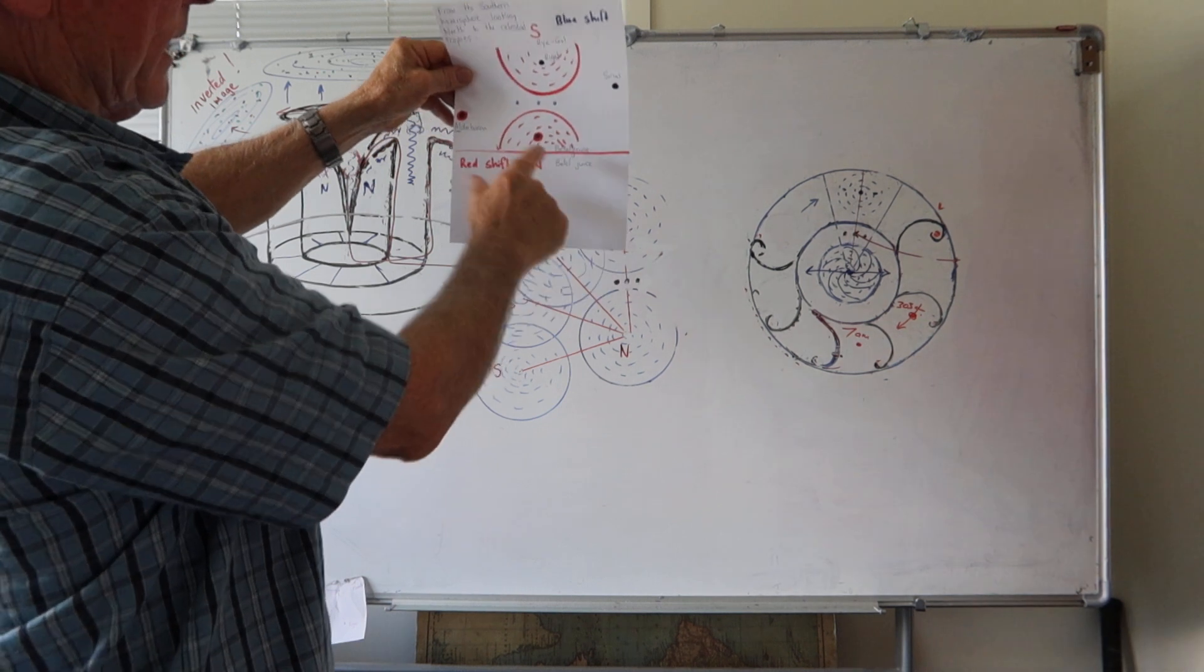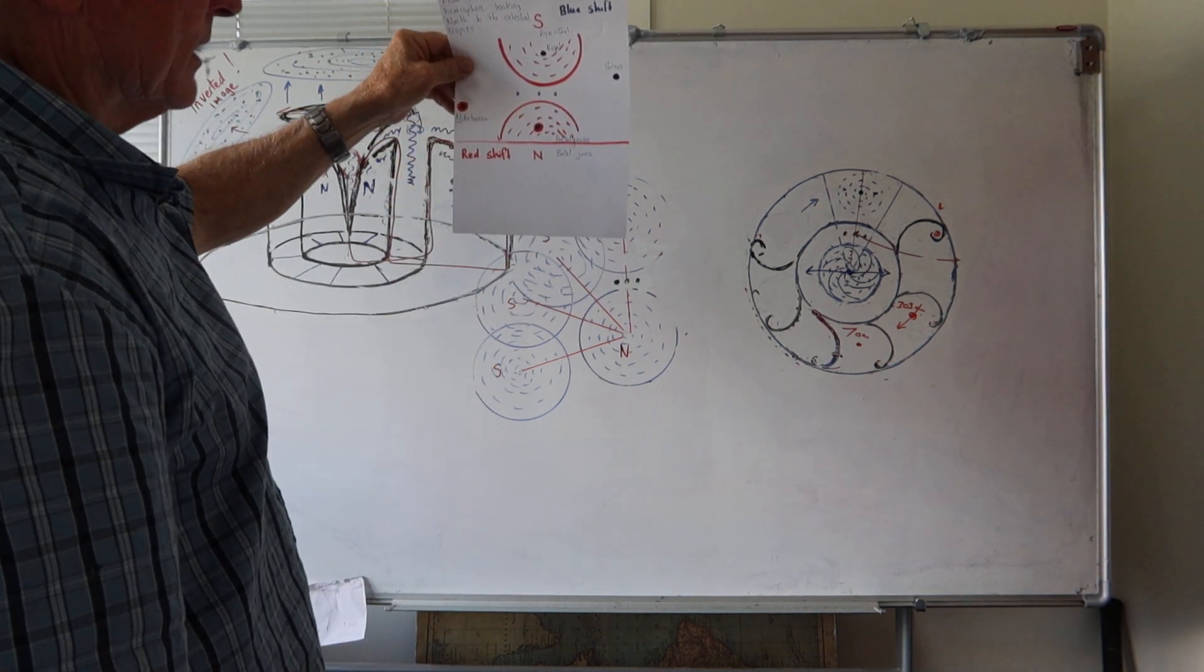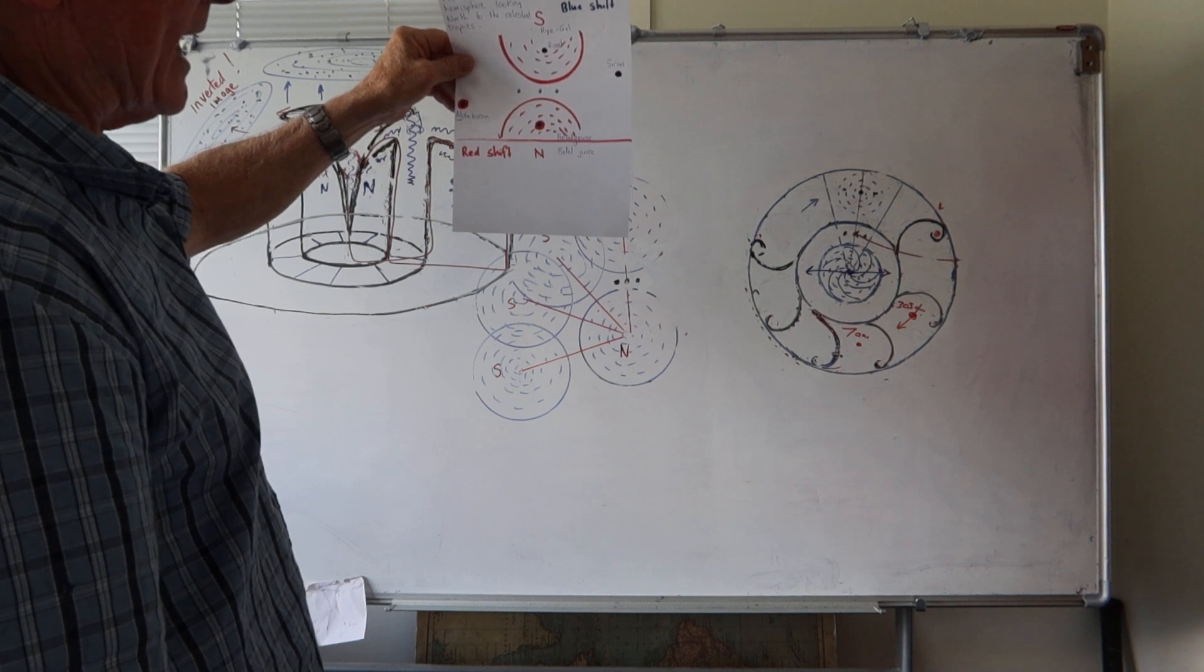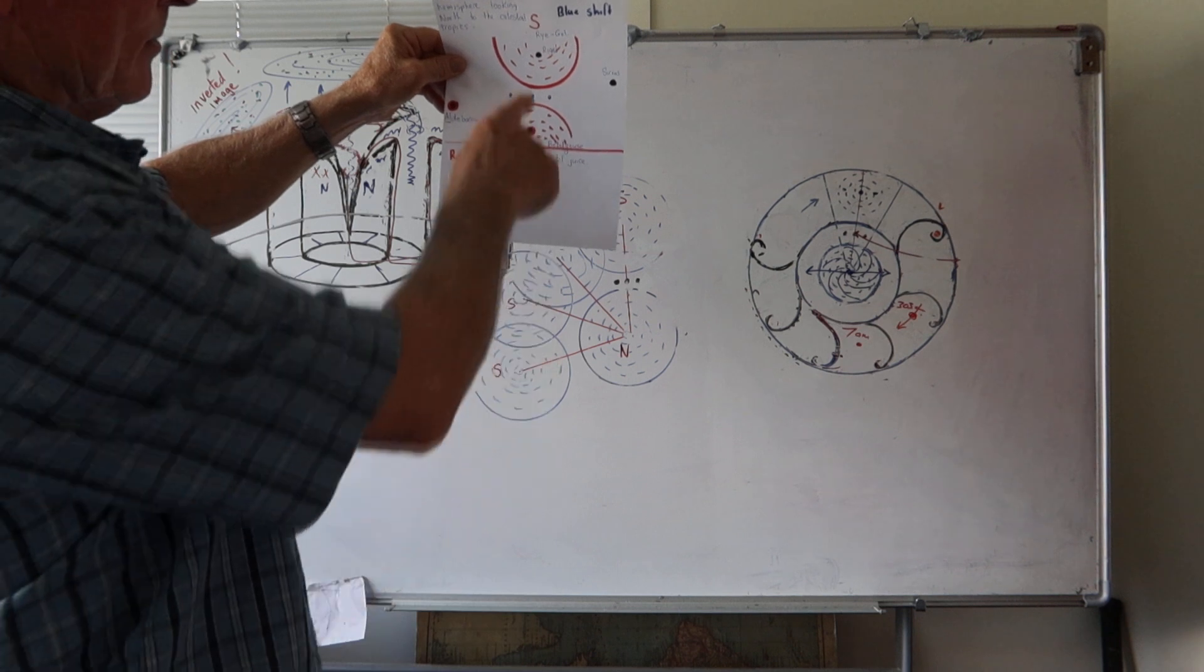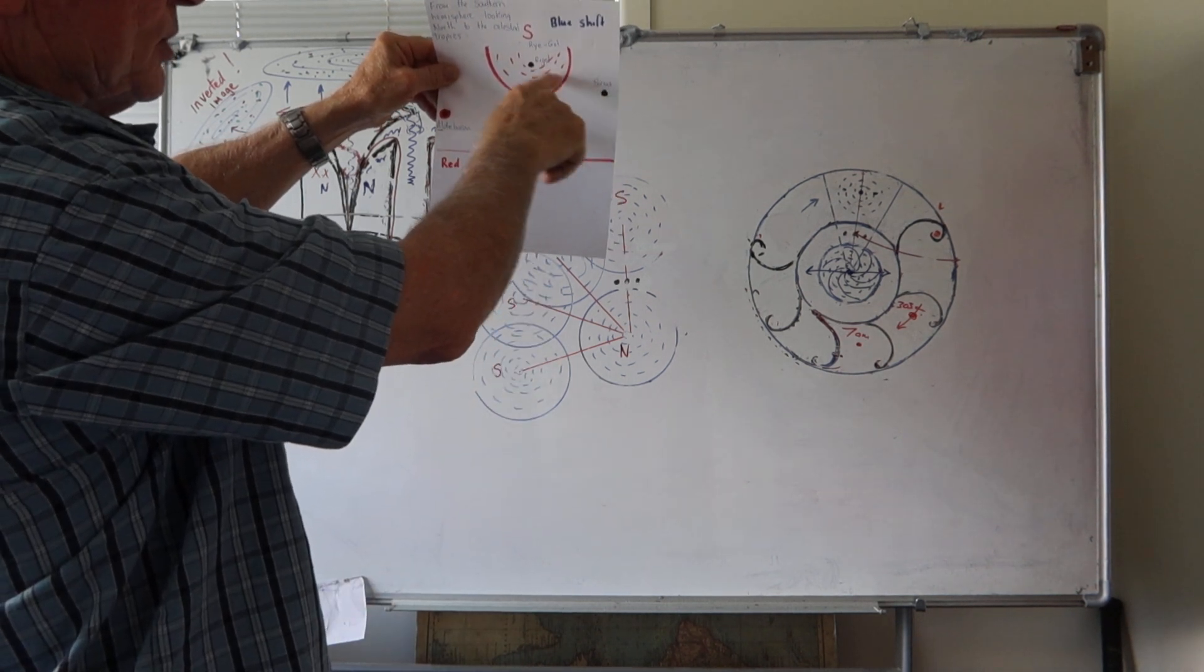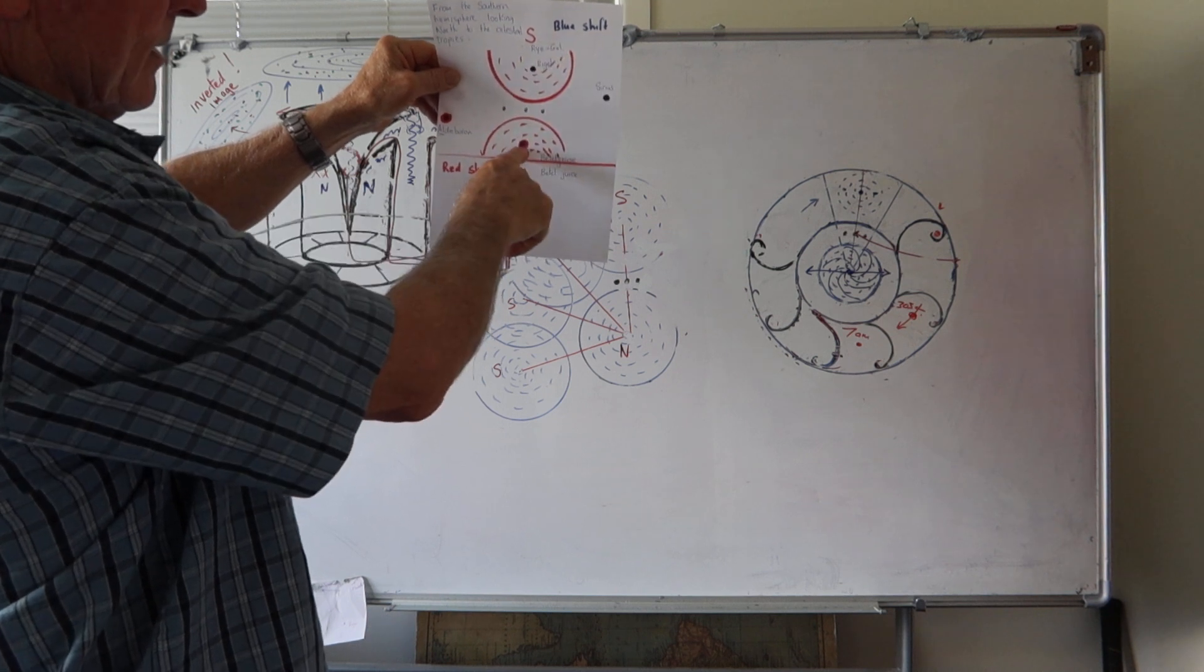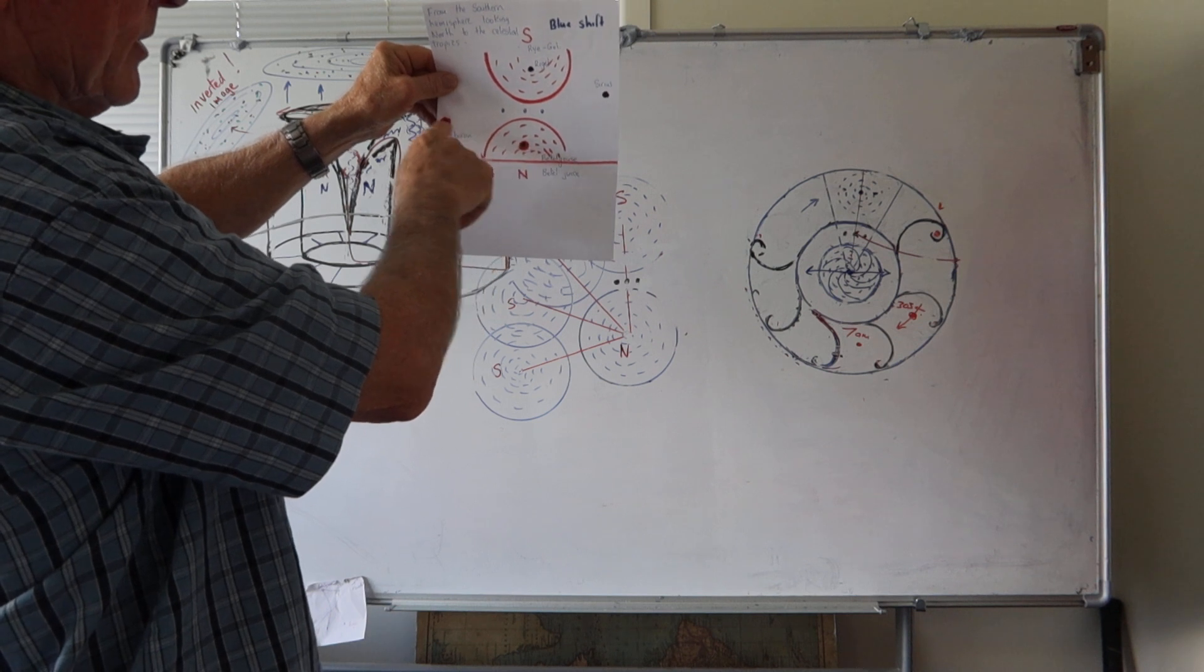So in the northern hemisphere we get Betelgeuse and Aldebaran - there's nice orangey red stars. Why is that? Because south is my hemisphere, they're blue, it's blue shift, close to me. That's further away in the northern hemisphere, that's red shift.